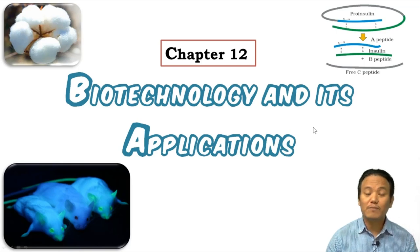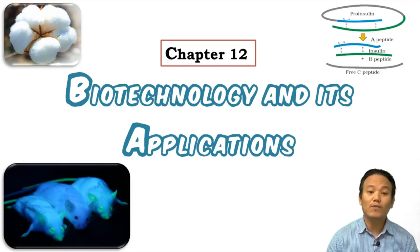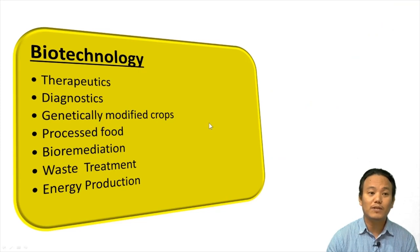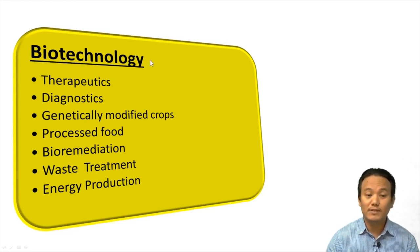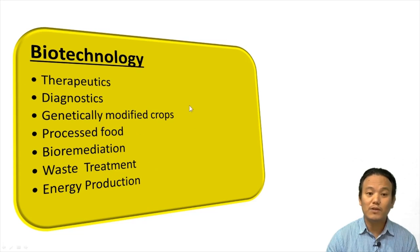In our previous chapter, chapter number 11 — Biotechnology: Principles and Processes — we discussed about various tools and processes involved in biotechnology. In this chapter we'll be discussing about the applications of biotechnology, which has been found useful in various fields for the welfare of human beings, for example in therapeutics, diagnostics, genetically modifying crops, processed food, bioremediation, waste treatment, energy production, etc.